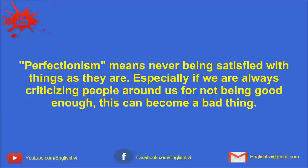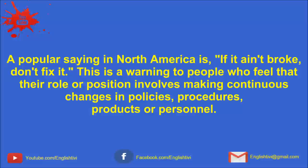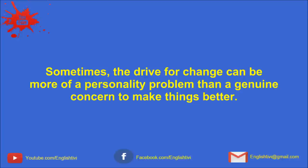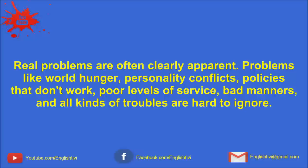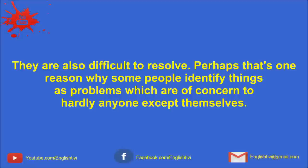Perfectionism means never being satisfied with things as they are, especially if we're always criticizing people around us for not being good enough. This can become a bad thing. A popular saying in North America is, 'If it ain't broke, don't fix it.' This is a warning to people who feel that their role involves making continuous changes in policies, procedures, products, or personnel. Sometimes the drive for change can be more of a personality problem than a genuine concern to make things better. Real problems are often clearly apparent: world hunger, personality conflicts, policies that don't work, poor levels of service, bad manners, and all kinds of troubles are hard to ignore. They are also difficult to resolve. Perhaps that's one reason why some people identify things as problems which are of concern to hardly anyone except themselves.